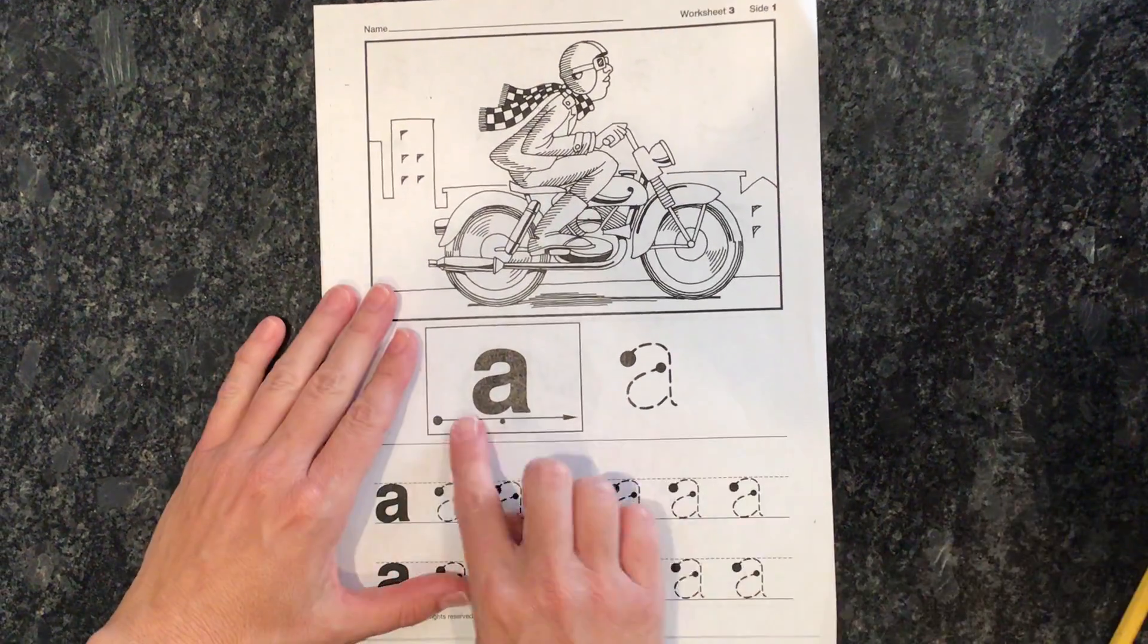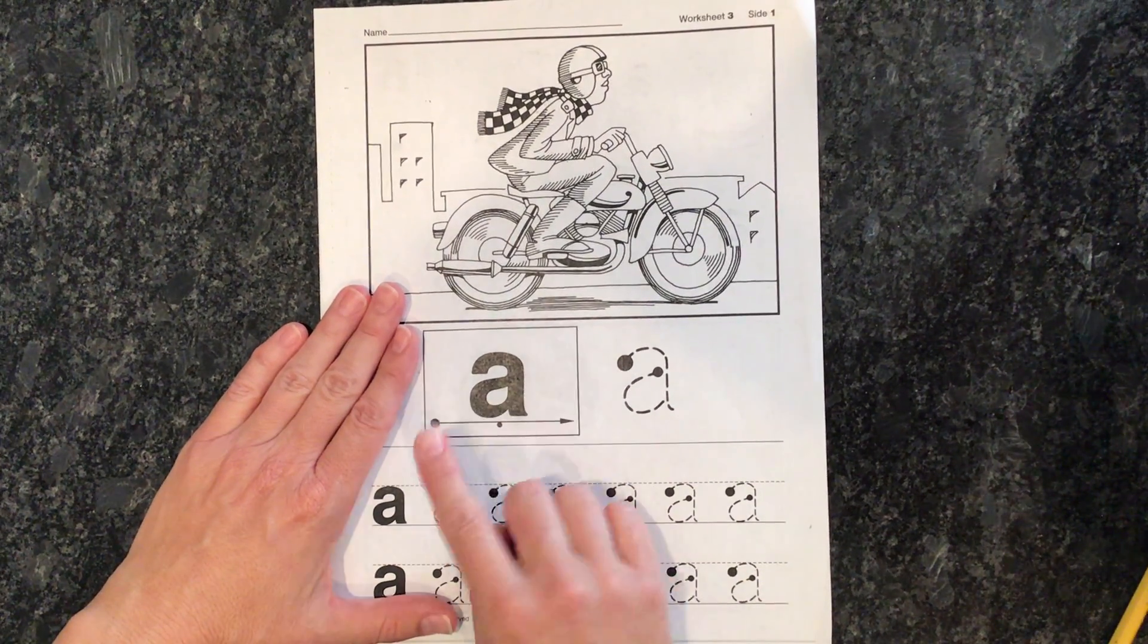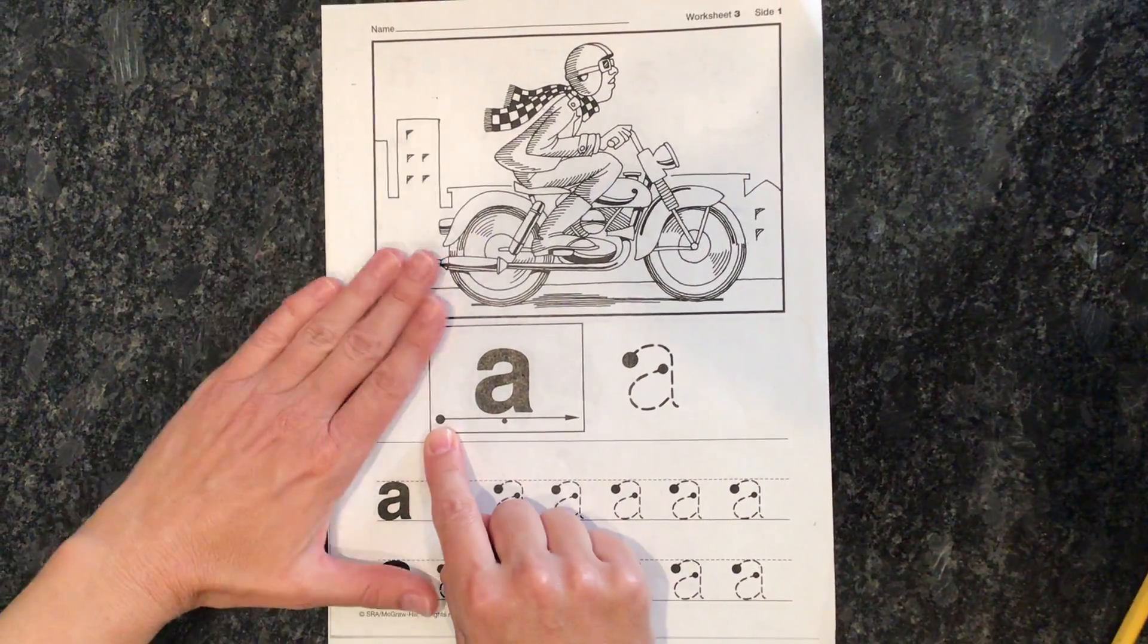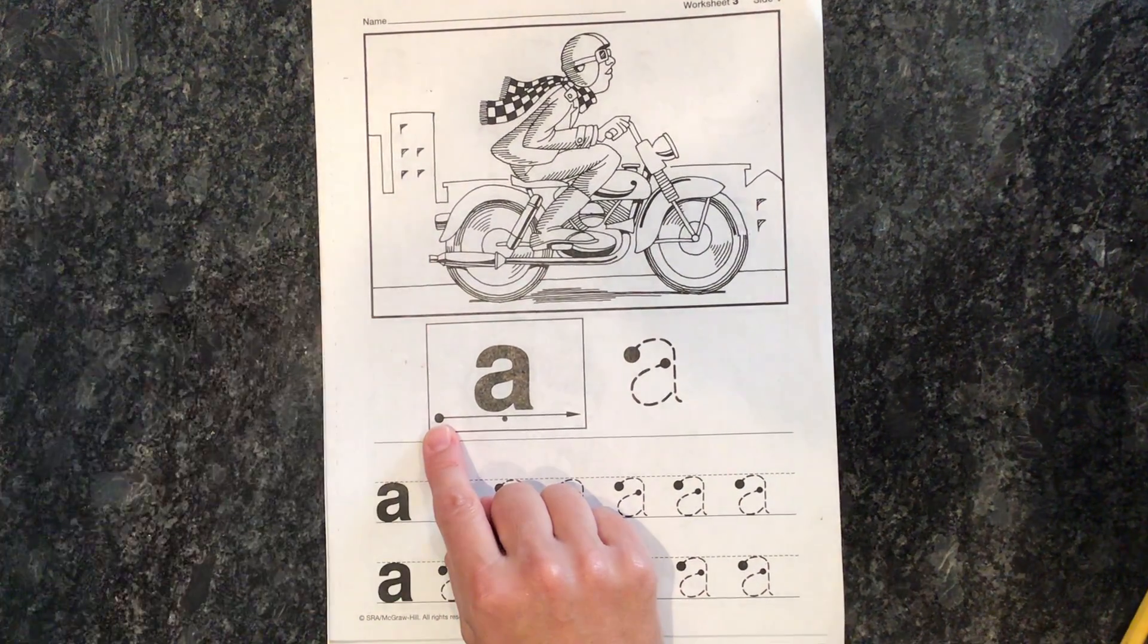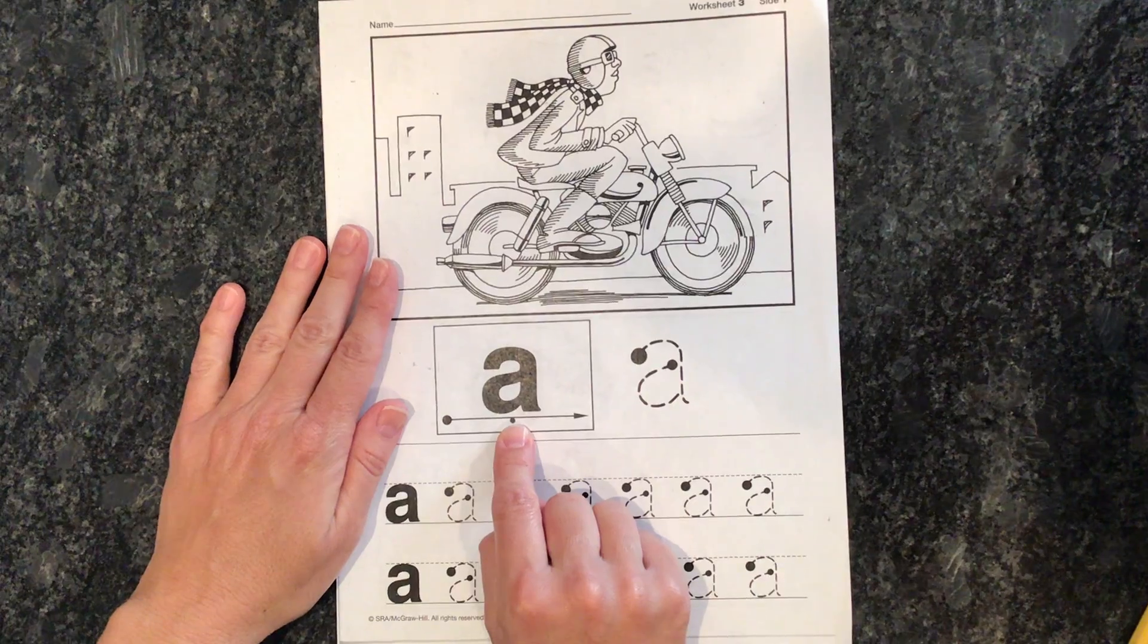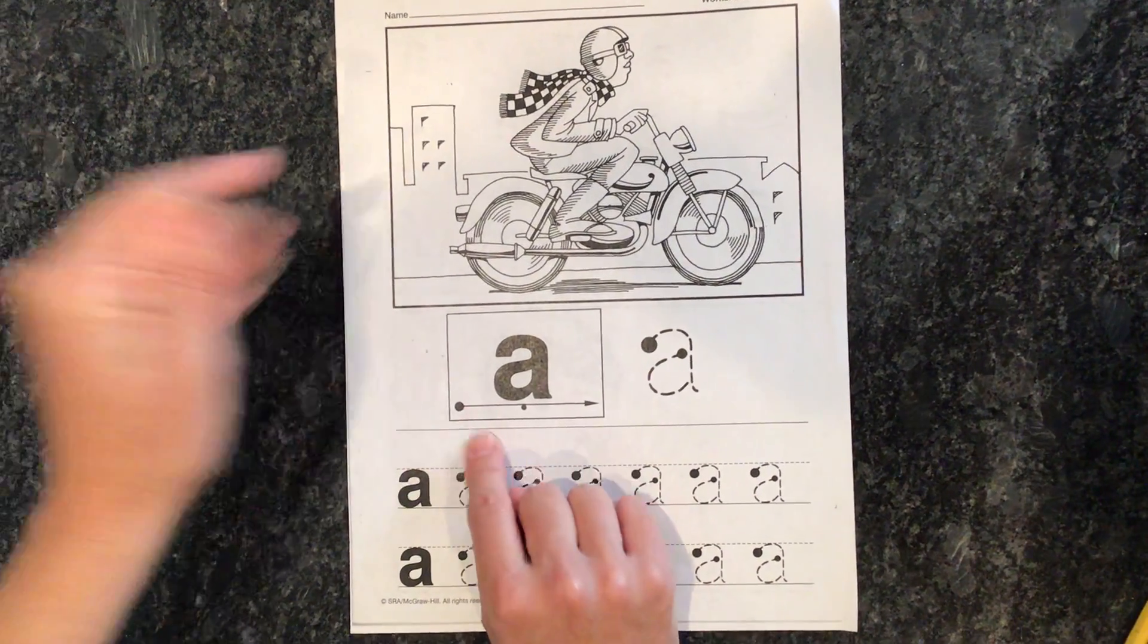We're going to practice saying our sound here first. Make sure you're in ready position. Two hands. Your pointer finger is under the big ball. The other hand is holding the piece of paper. Listen to me first. Ah. Good. Let's do it together. Get ready.